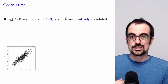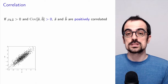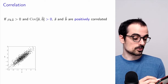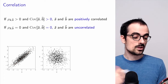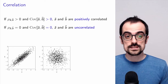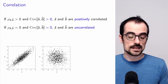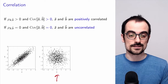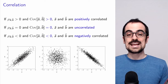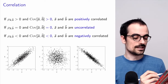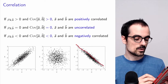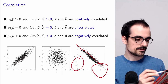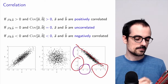When the correlation coefficient and the covariance are both positive, we say A and B are positively correlated — the linear dependence is directly proportional. When they are zero, we say the two random variables are uncorrelated — there is no linear dependence between them. When they are negative, the linear dependence is inversely proportional: when A is positive, B tends to be negative, and when A is negative, B tends to be positive.